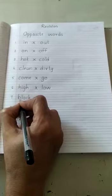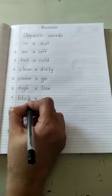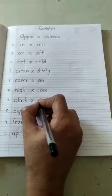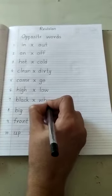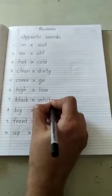Next is Black. B L A C K. Black. Opposite word for black is White. W H I T E.